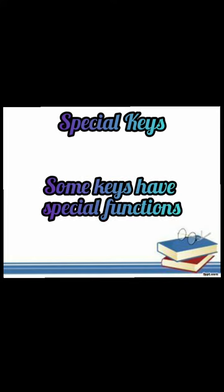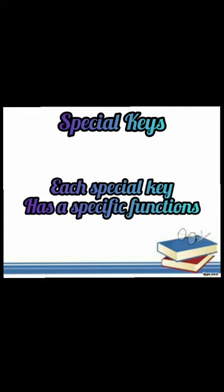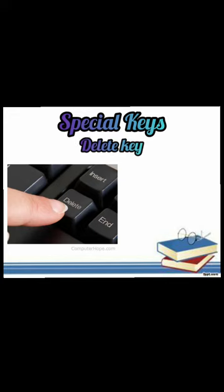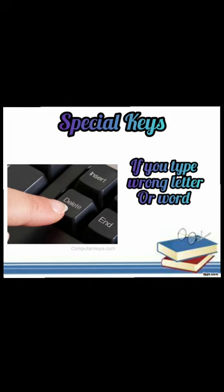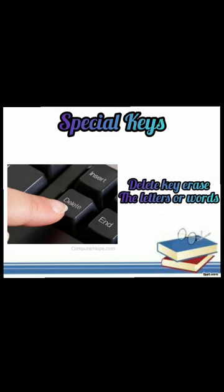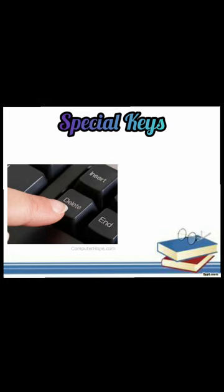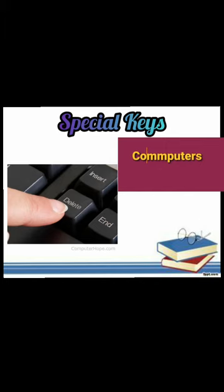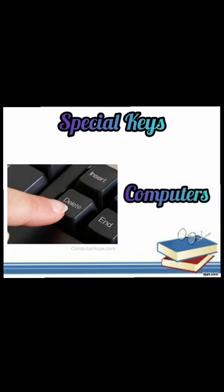Third, special keys. Some keys have special functions, and each special key has a specific function to perform. First, the Delete key. If you type a wrong letter or word by mistake, you can use the Delete key. The Delete key erases letters or words after the cursor. If you want to delete a letter or word, place the cursor before that letter or word and press Delete. For example, if you have typed 'computers' with a wrong spelling, place your cursor before the incorrect letter and press Delete — one letter will be deleted.